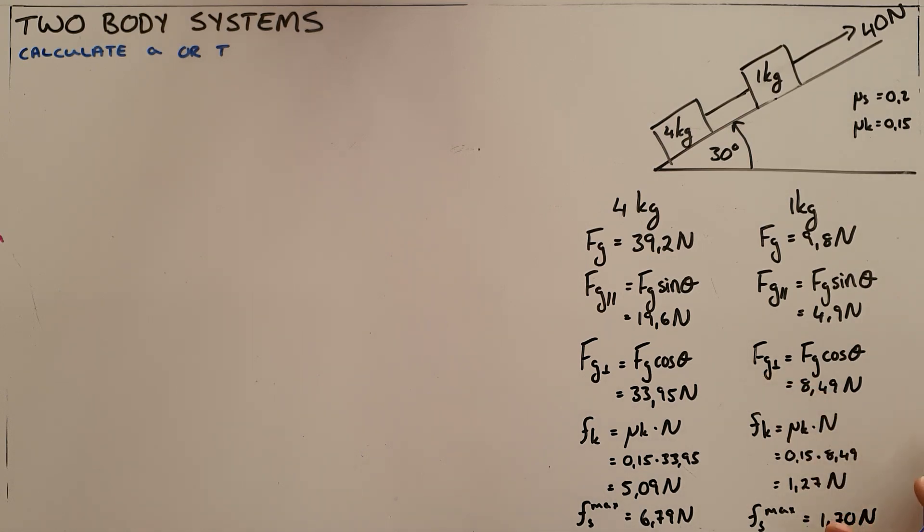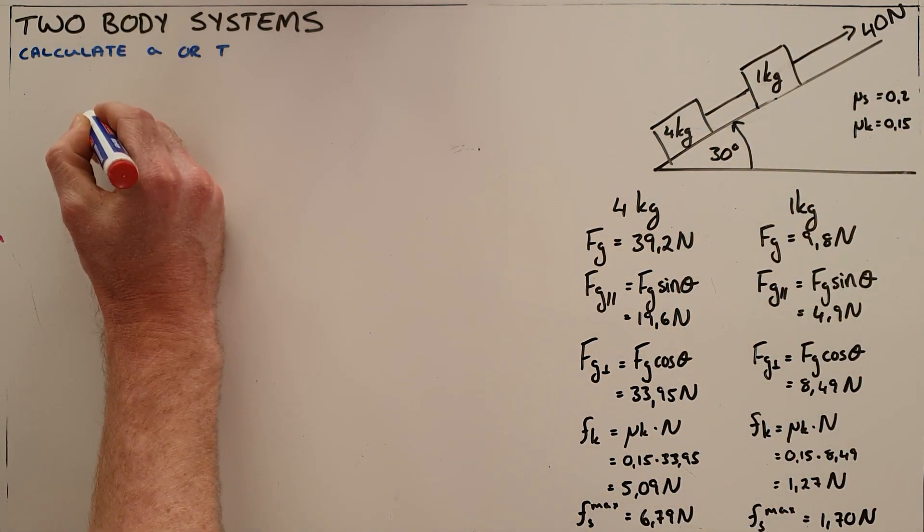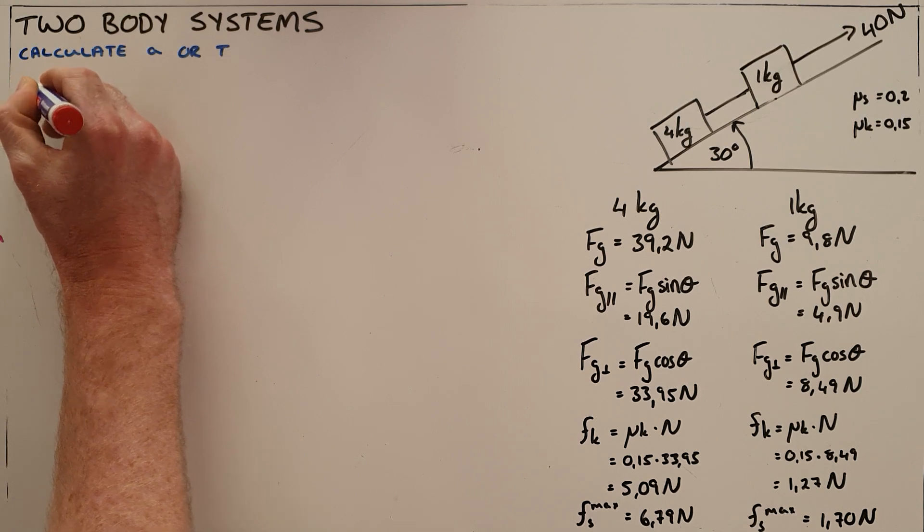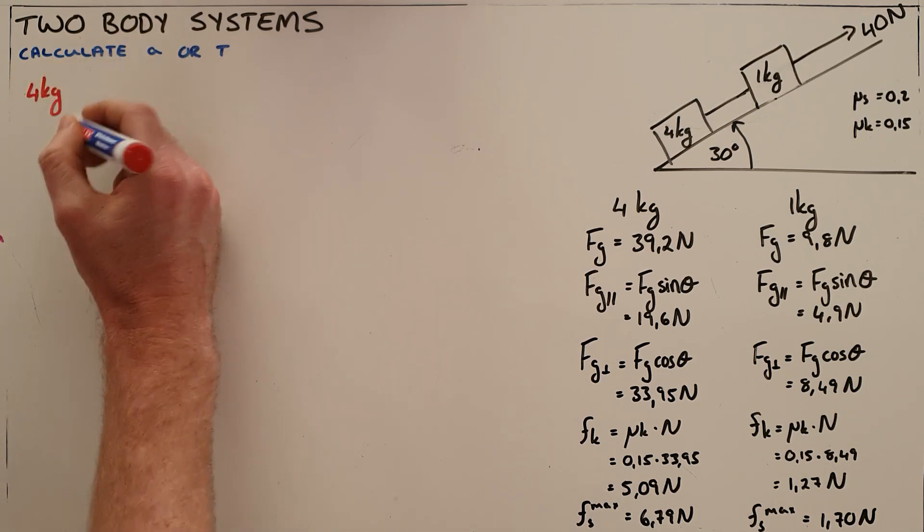The first thing that's important to see here is that these are two separate objects and so that is always your starting point and you would start by drawing a free body diagram for each of these objects.